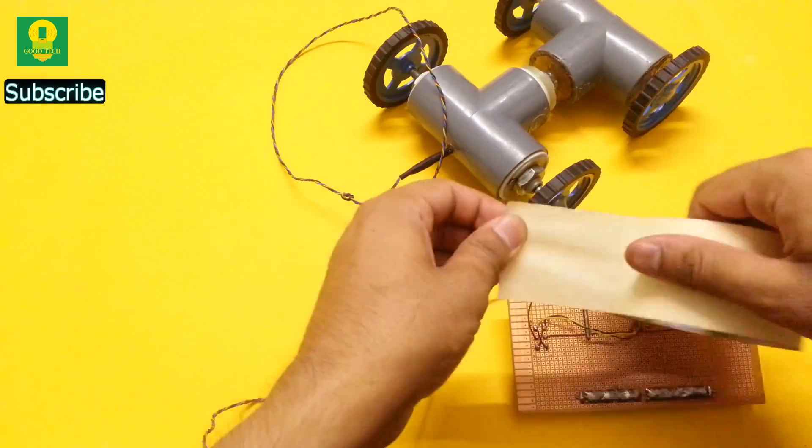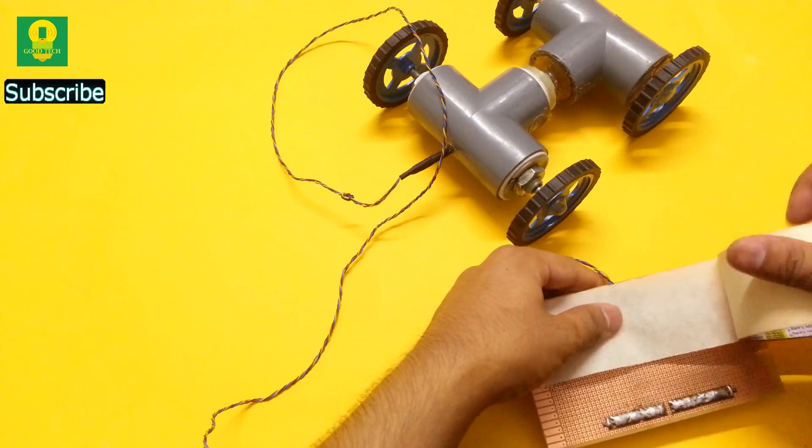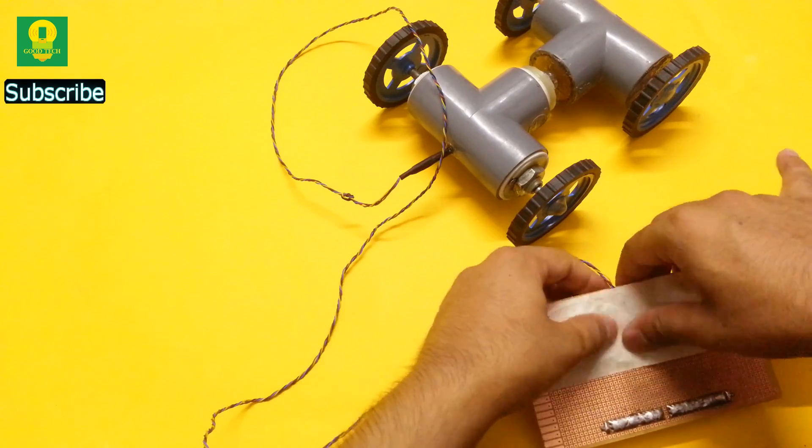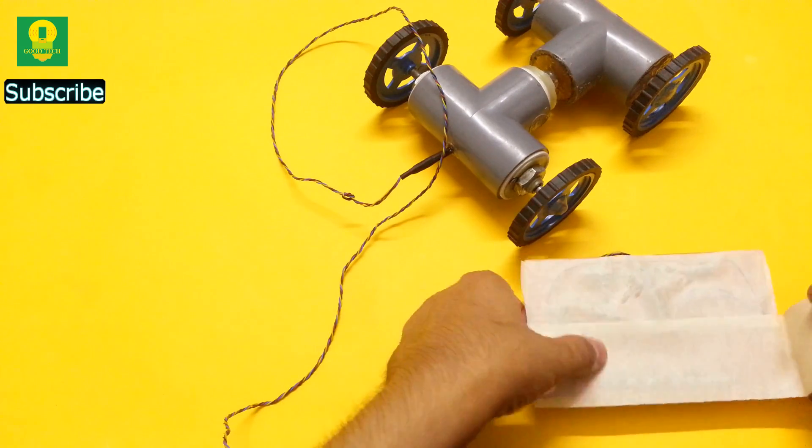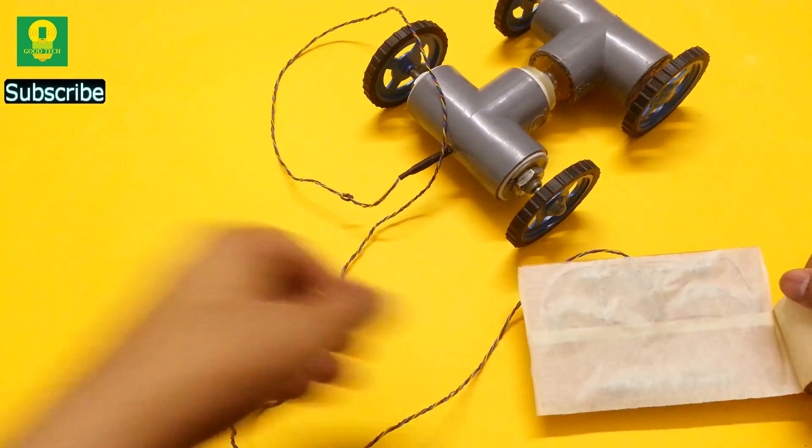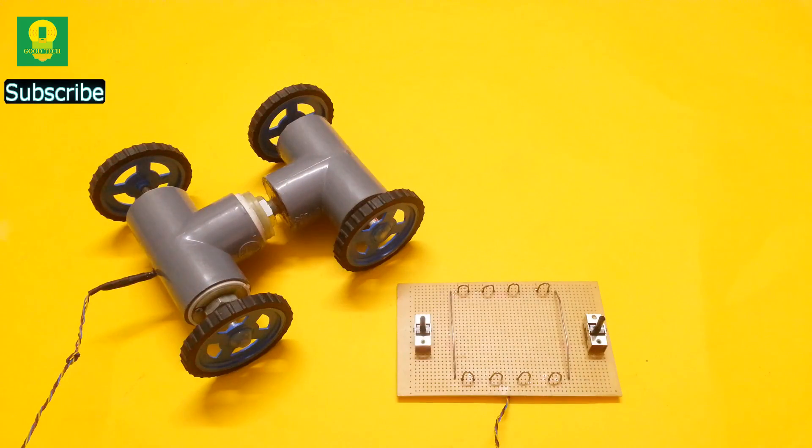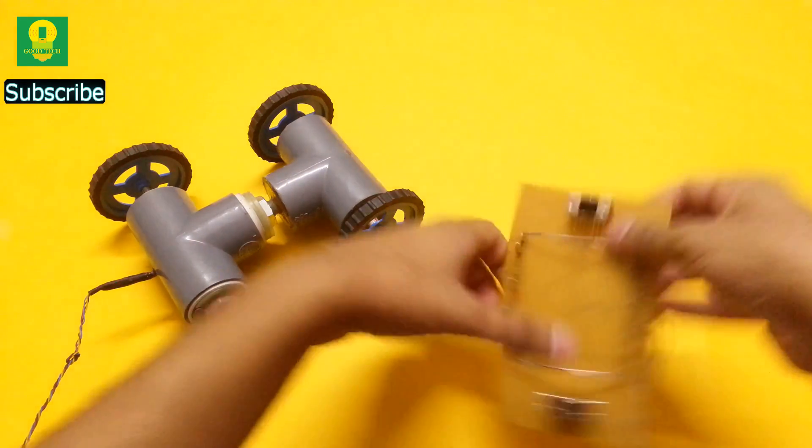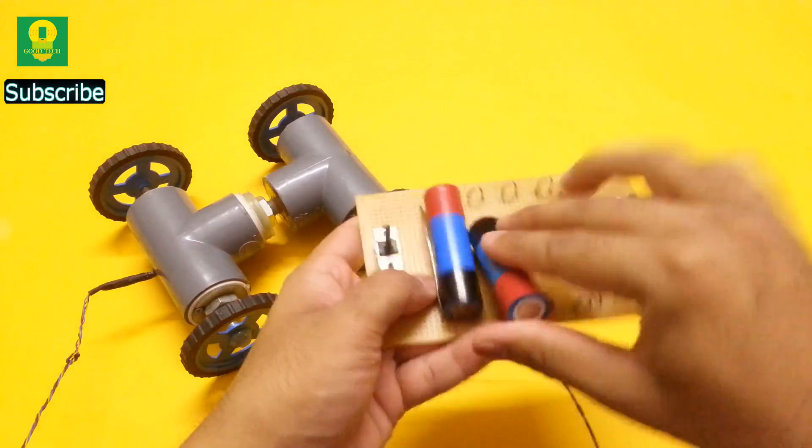To secure the connections, cover the remote with the insulation tape. Our remote control stunt car is ready to be used. Insert the cells and have fun.